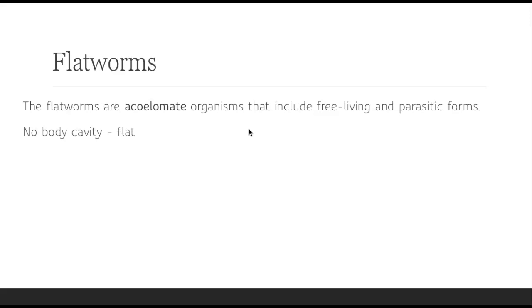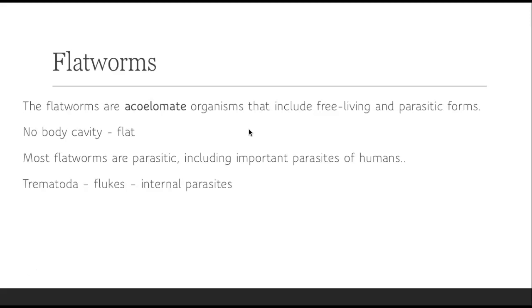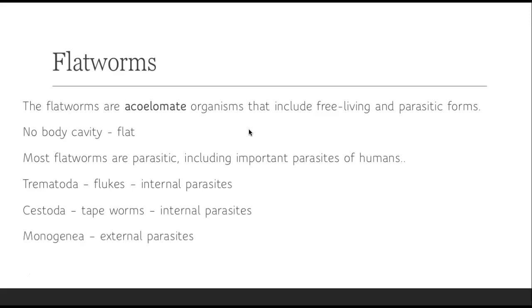Again, flatworms have no body cavity, and that makes sense — they're flat. Most of them are parasitic. There are a number of important parasites of humans. There are the trematoda, or trematodes, the flukes, which are internal parasites. The cestoda, which are the tapeworms, also internal parasites. The monogenea, which are external parasites. And the tubularia, which are free-living flatworms like planarians.